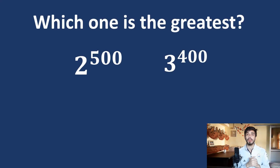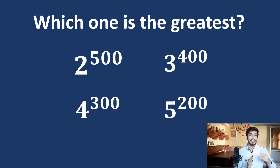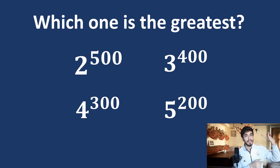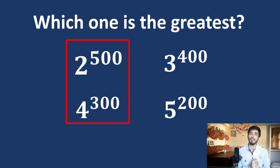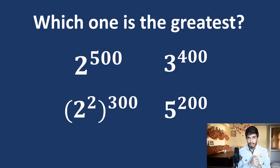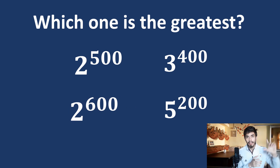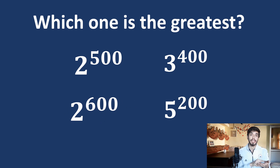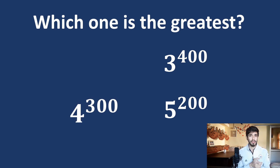Now let's come back to the question: which is the greatest? We won't calculate anything — using the three rules we compare powers and bases. For example, 2 raised to the power 500 and 4 raised to the power 300: since 4 equals 2 squared, we rewrite it as 2 raised to the power 600. Now bases are equal, and since 600 is greater than 500, we eliminate 2 raised to the power 500.